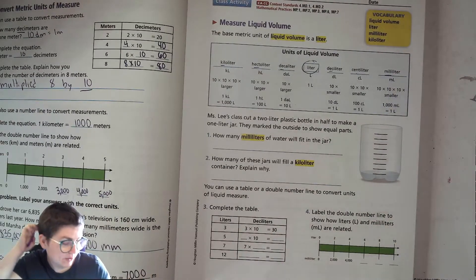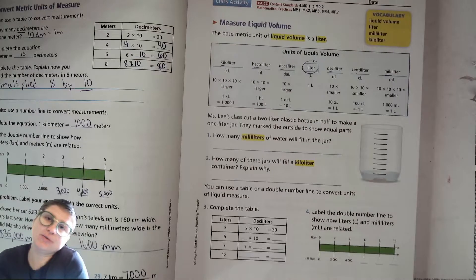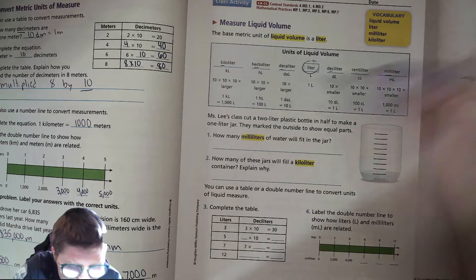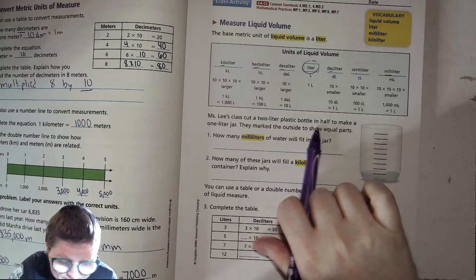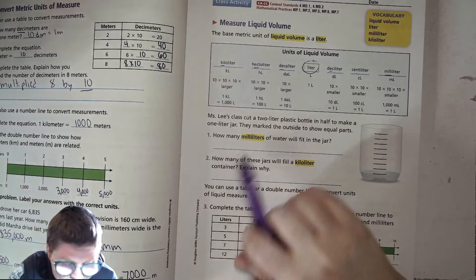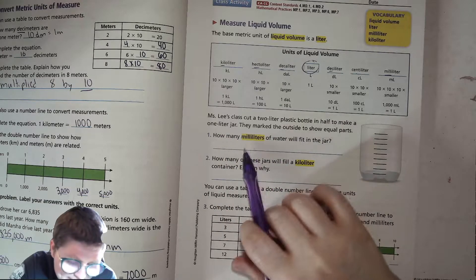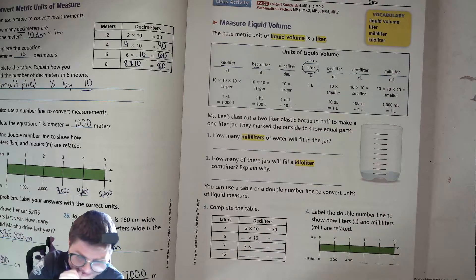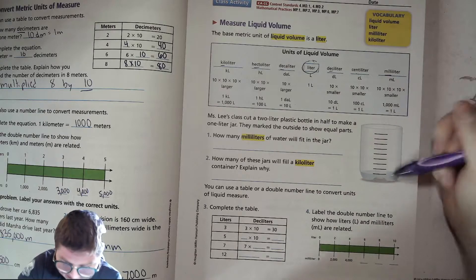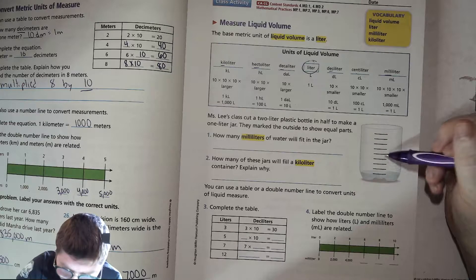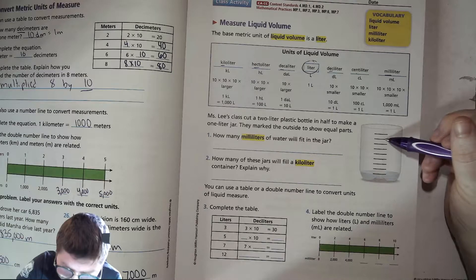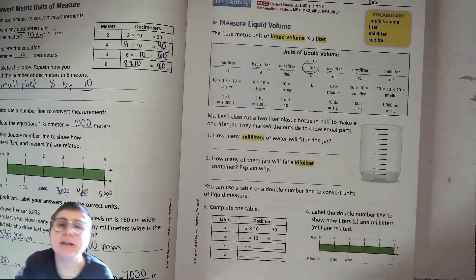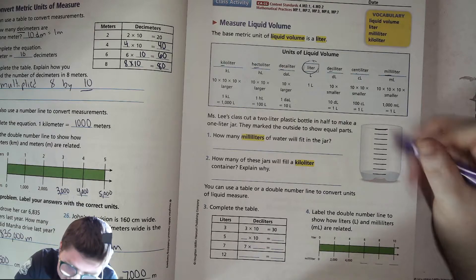So let's go ahead and go through some of these different exercises. Miss Lee's class cut a two liter plastic bottle in half to make a one liter jar. They marked the outside to show equal parts. How many milliliters of water will fit in the jar? Let's see, one, two, three, four, five, six, seven, eight, nine, 10. If there are 10 tops, if they're going to fill it all the way up to that line there,